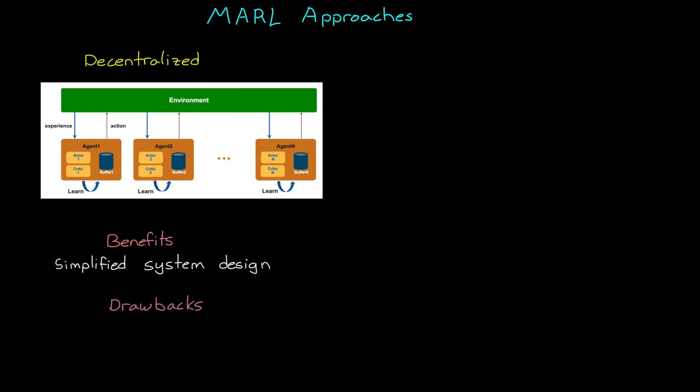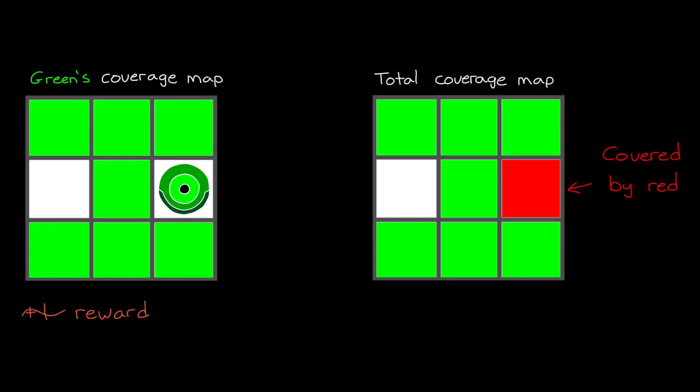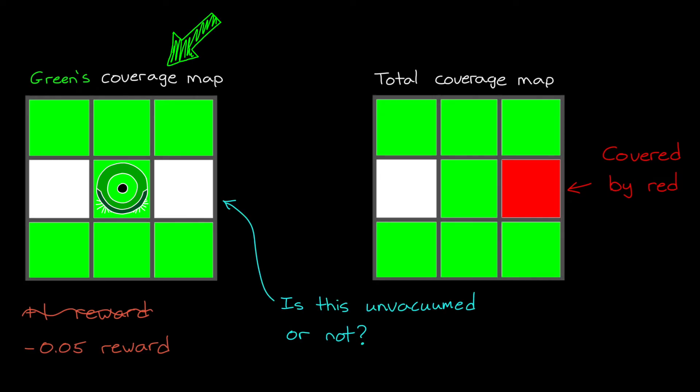However, at least in this example, there are also a few obvious drawbacks to this method. The first is that since the vacuums don't know which parts of the room the others have covered, then they can't learn how to avoid those areas. I mean, for example, here the green robot is in this situation where it thinks that there is an uncovered spot to its right and one to its left. And so, if it takes an action to the right, then it should receive a positive reward since it hasn't been covered yet. However, if that spot was actually covered by a different vacuum, then it would be penalized instead. So, it's going to want to learn to avoid this situation. However, the problem is that since the green robot only has access to its own coverage map, it can't actually learn how to distinguish between an un-vacuumed square and one that was covered by a different vacuum.